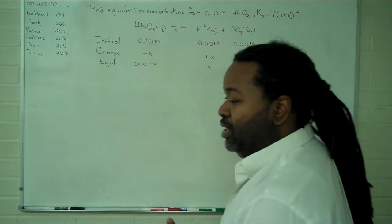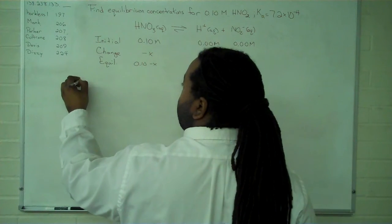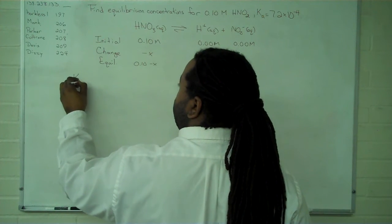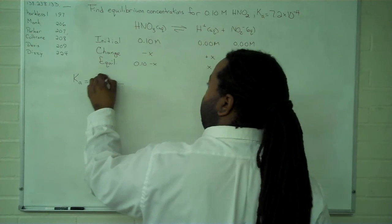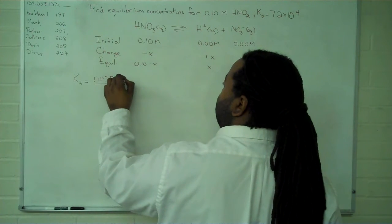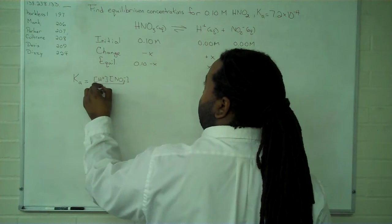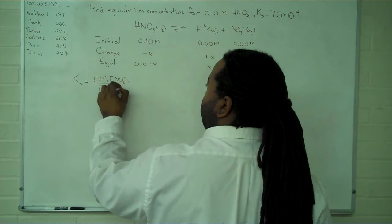So the next step then is to write out our equilibrium constant and that expression, Ka, is going to have the concentration of our ions up top and the undissociated acid on the bottom.